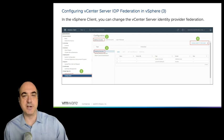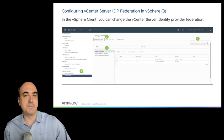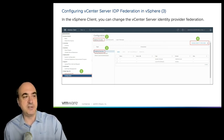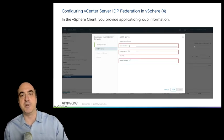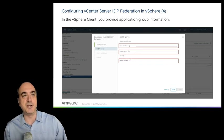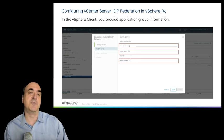Going back to our configuration: imagine we've collected the redirect URIs from the vCenter server, gone to ADFS and created the application group, which generated a client ID and a secret key. We can now go back to vCenter, under Single Sign-On configuration, and change our identity provider. Filling in the form requires the information created on the ADFS system from the application group: a client identifier, a shared secret, and an OpenID address. Filling in this form will associate the identity provider in vCenter with the identity provider on ADFS.